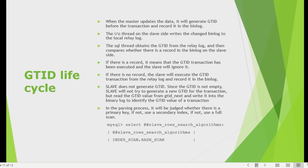During row-based replication parsing, MySQL determines how to locate a row: first using a primary key, then a secondary index, then a full index scan. You can configure the algorithm using the slave_rows_search_algorithms variable. MySQL 8 uses INDEX_SCAN and HASH_SCAN; the full scan option was removed in later versions (at least not present in version 8.0.23).